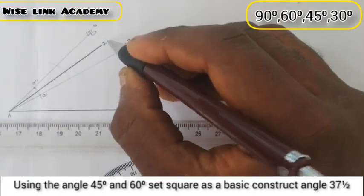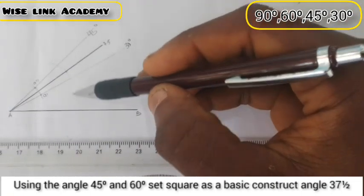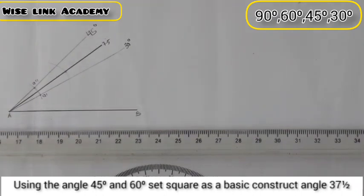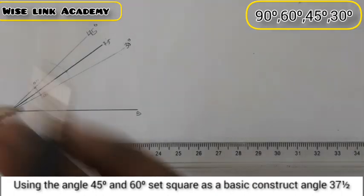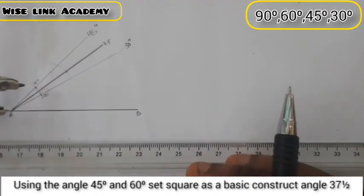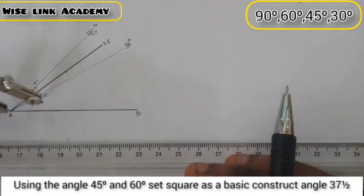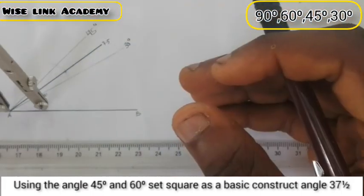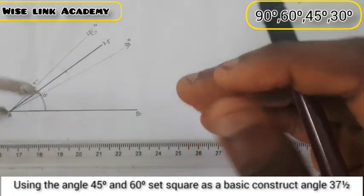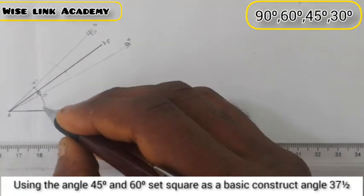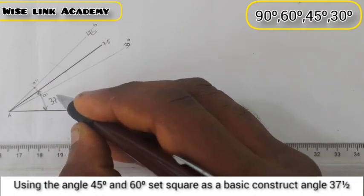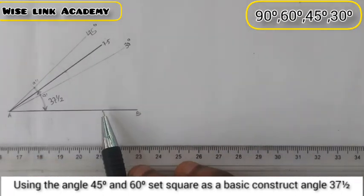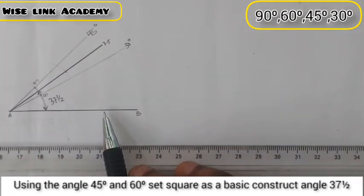Here is 7.5. It simply means the angle from here to here is going to be 37 and a half. I'll take my compass here to indicate the angle from this point here down to this point. This point here down to this point is 37 and a half.